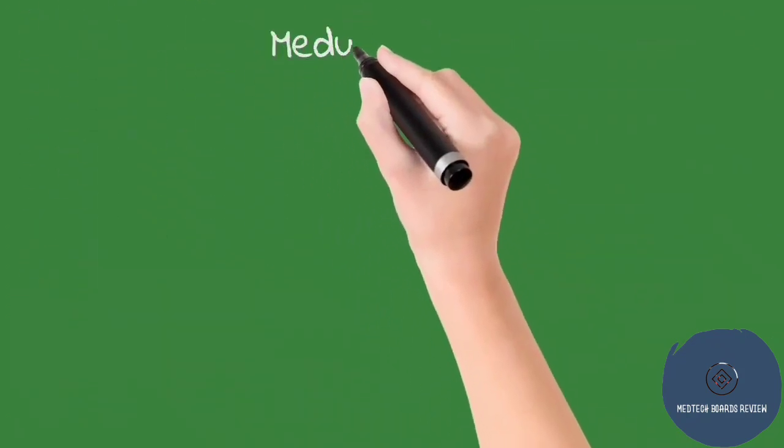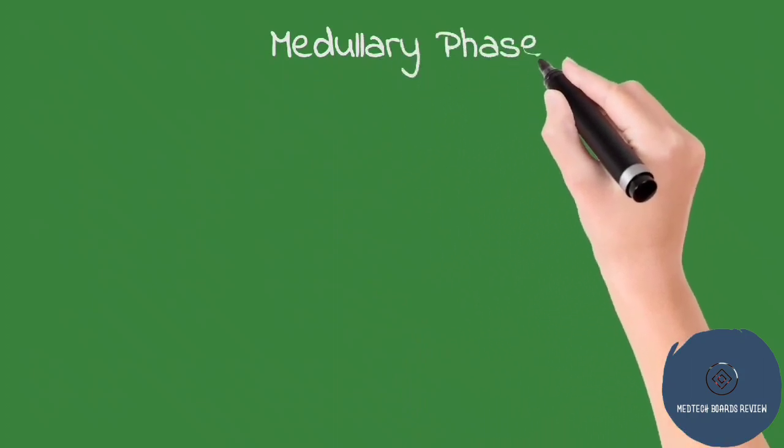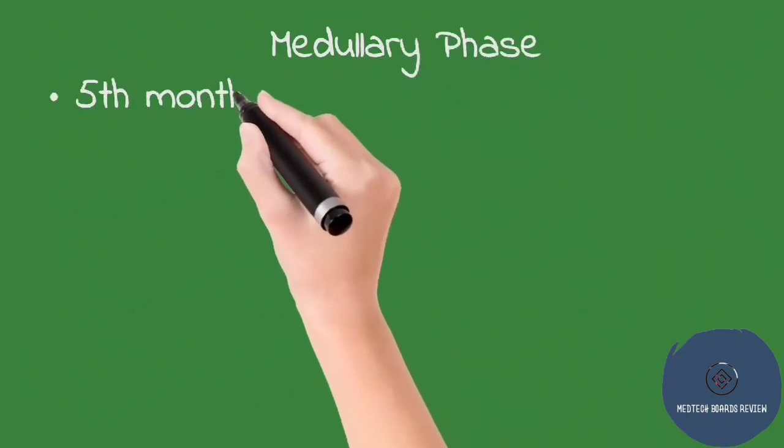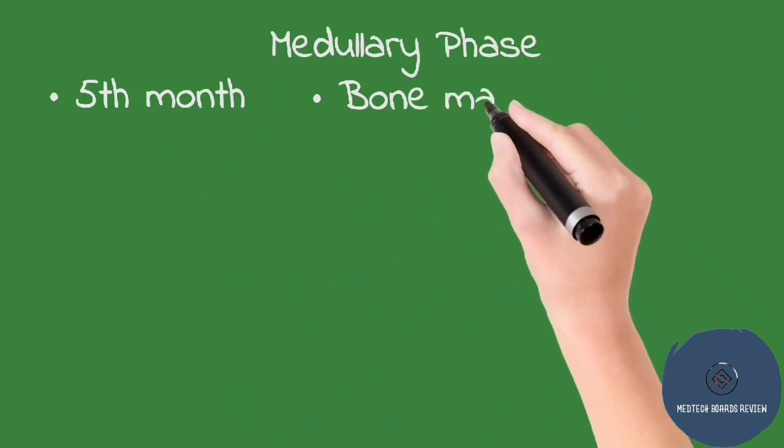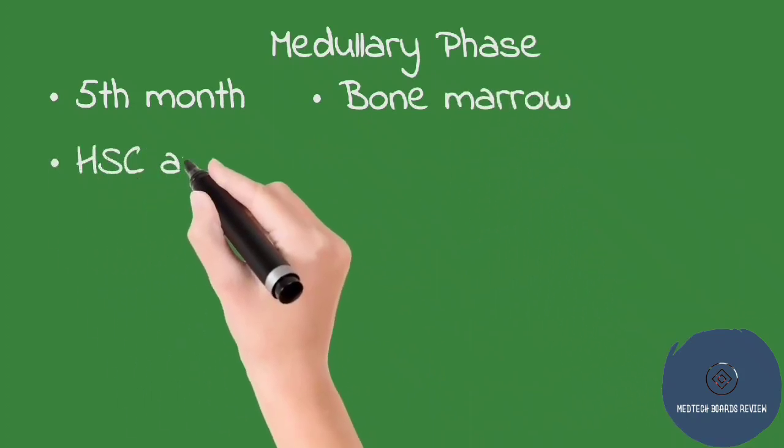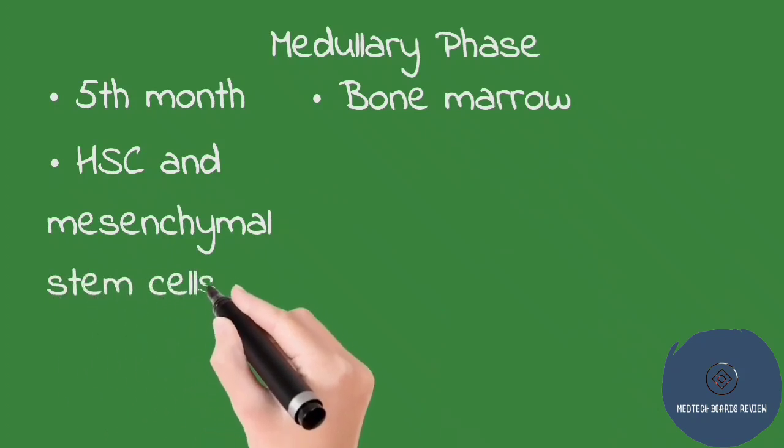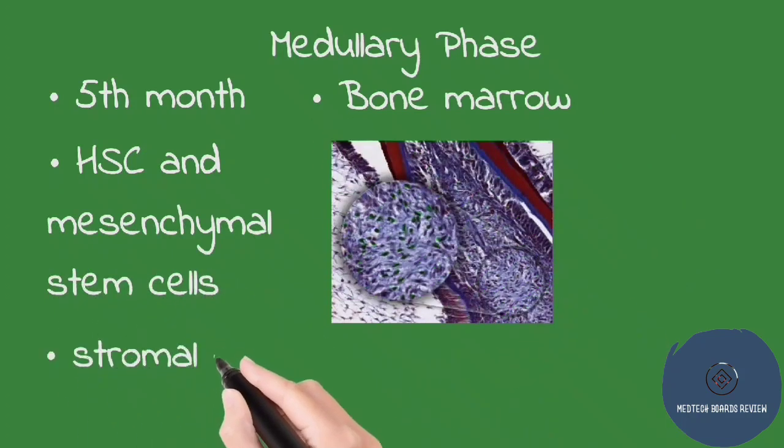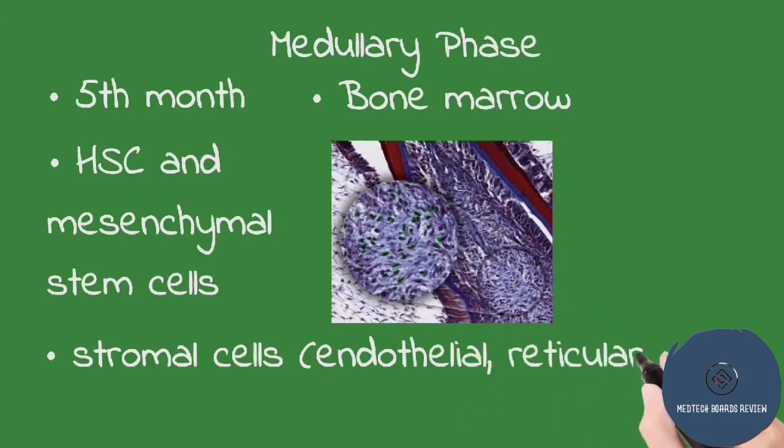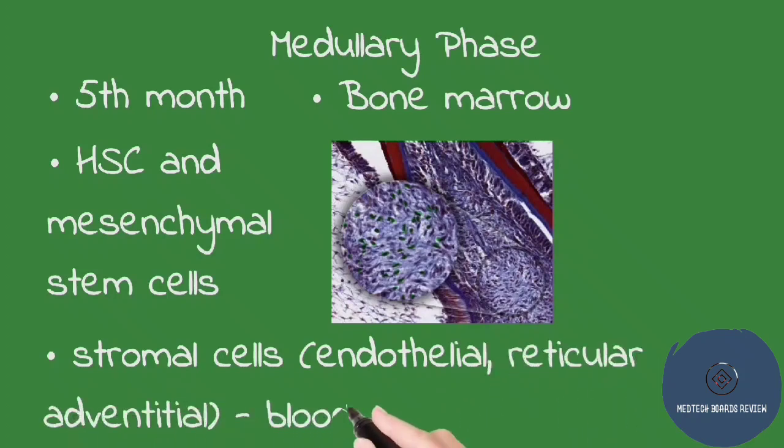The last phase is the medullary phase, which starts at 5 months of pregnancy until adulthood. Hematopoietic stem cells and mesenchymal cells migrate towards the bone marrow. The mesenchymal cells later on develop into stromal cells like endothelial and reticular adventitial cells, also called fibroblasts. They support the formation of blood vessels.